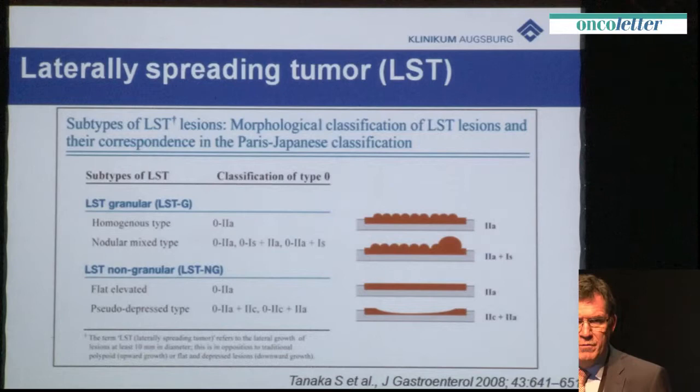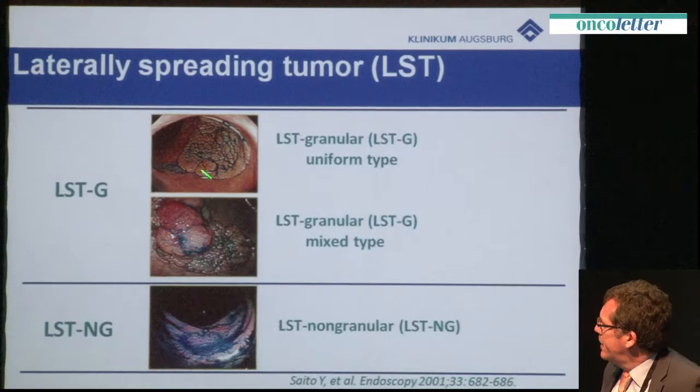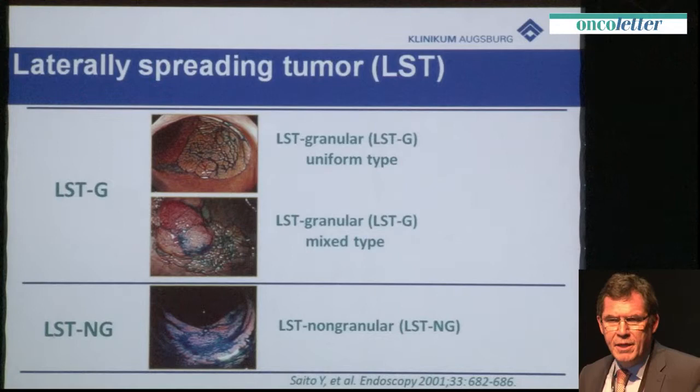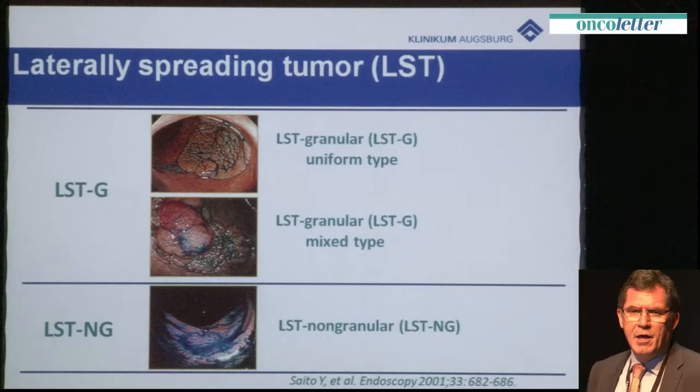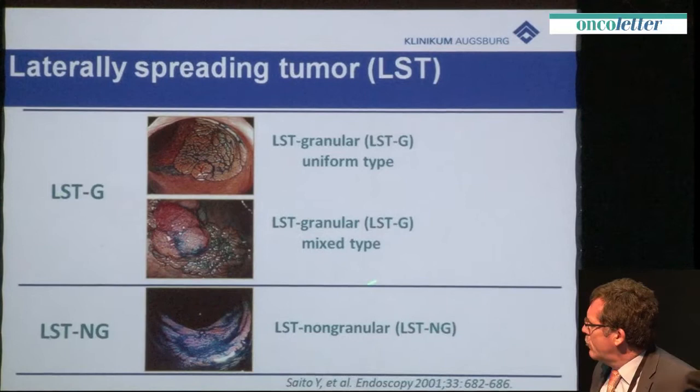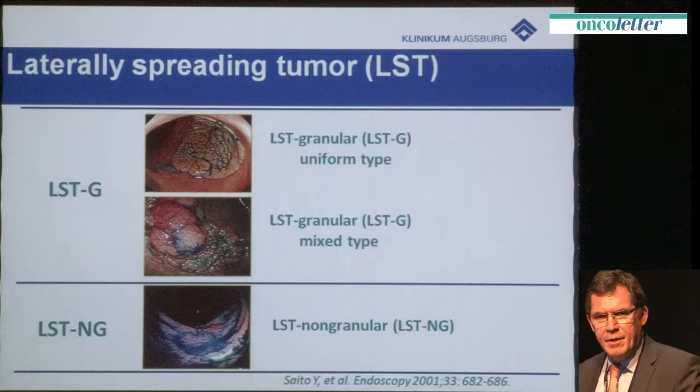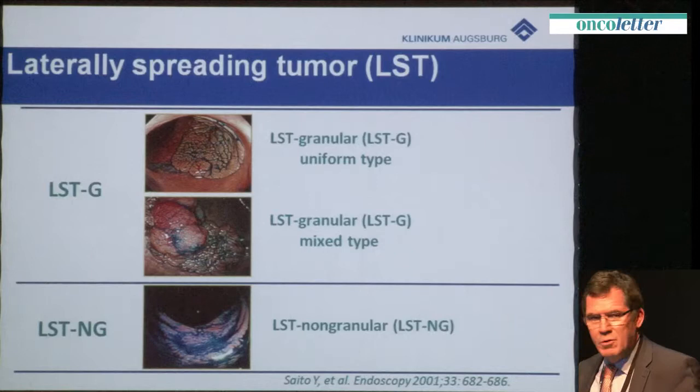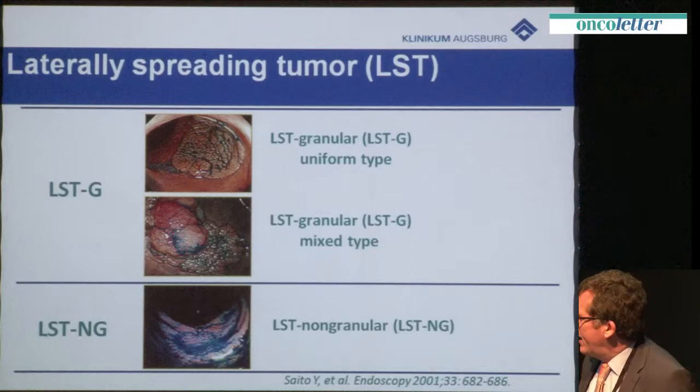Here are some examples. This is a granular type lesion — it can be easily resected by piecemeal EMR. The only disadvantage of EMR versus ESD is a higher local recurrence rate. The so-called mixed type has larger nodules and an increased risk of malignancy or submucosal invasion. And finally, the non-granular type lesion: these lesions have a high risk of invasive cancer and shouldn't be treated with EMR.